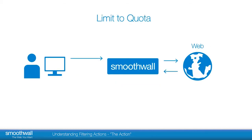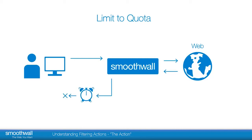Limit to quota is where Smoothwall allows the content but only for a set period of time. This allows you to limit content such as Skype, where you may not want to fully block but you don't want to allow excessive use which may waste time or use excessive bandwidth. The user will see a page notifying them of the time limit and be reminded at set intervals. Once the time limit is up, the content will be blocked until the quota resets for the next 24 hours. See the video 'Setting up a quota' for instructions on how to create custom quotas.